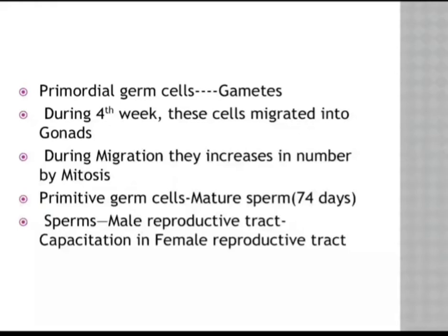When do these cells begin to differentiate in an organism? During the fourth week of pregnancy, the primordial germ cells will migrate into the gonads, either into the testis or the ovary. During this migration, they will increase in number by means of mitosis. These primary germ cells undergo repeated division at the time of the fourth week and migrate into the gonads, increasing in size before being lodged into the testis or ovary.